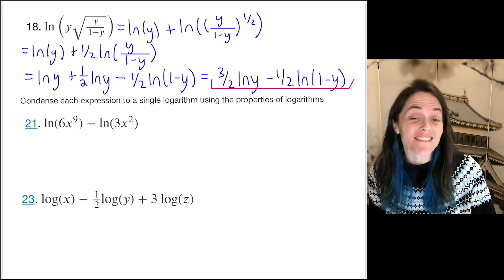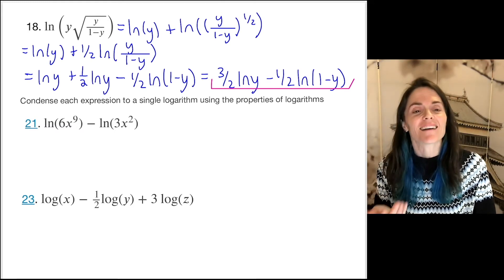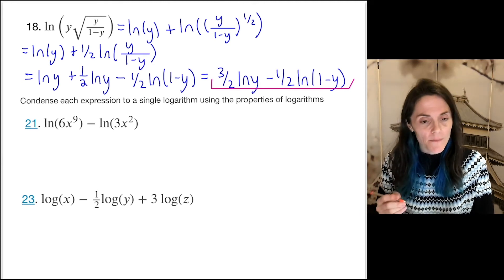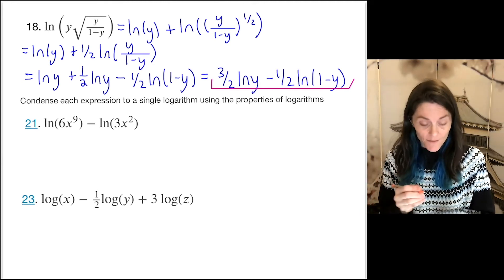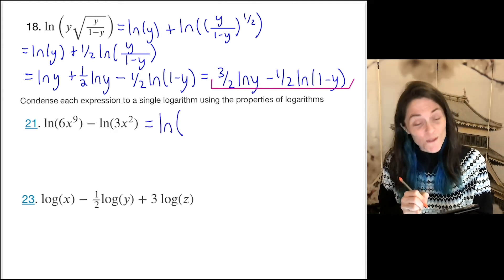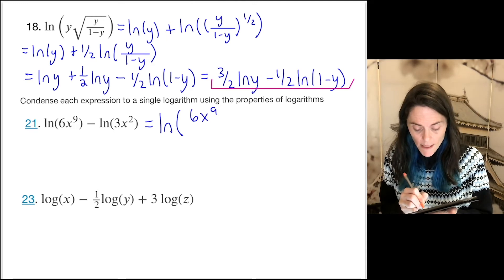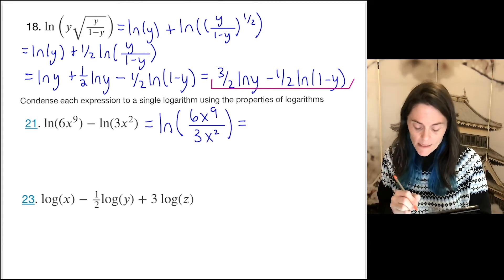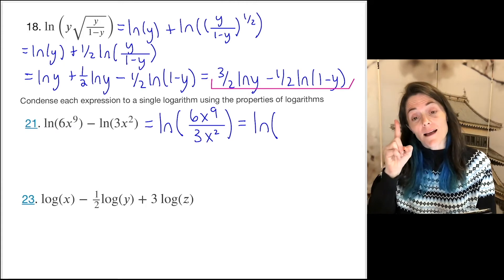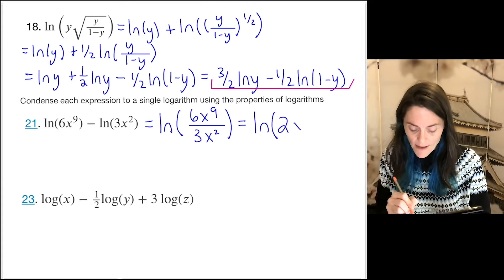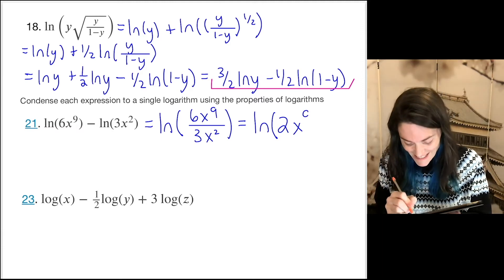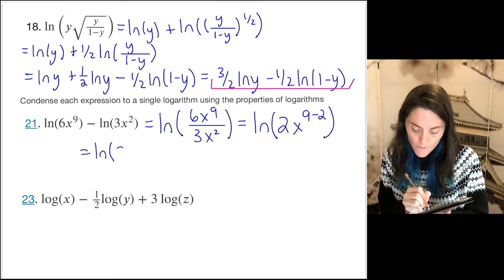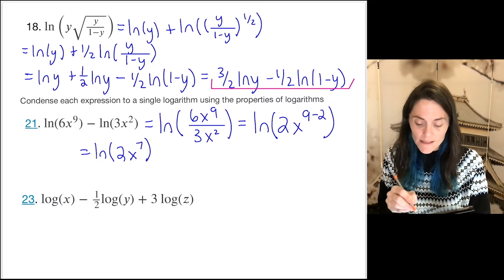Now we have a few where we do the opposite — we want to combine into a single log. For problem 21, I see a difference of two logarithms, so this can be combined as a quotient on the inside: ln of 6x to the ninth divided by 3x squared. Simplifying inside: six over three is two, and x to the ninth over x squared is x to the seventh. The answer is ln(2x⁷).